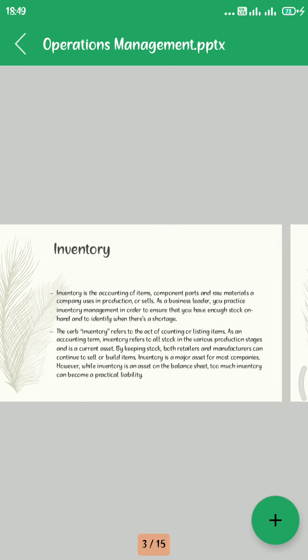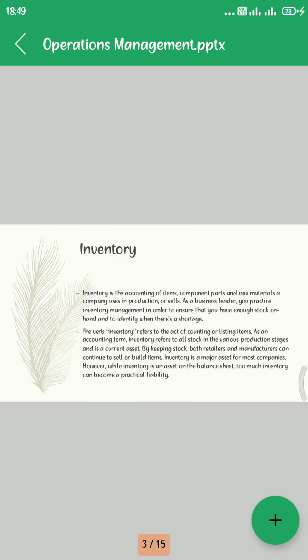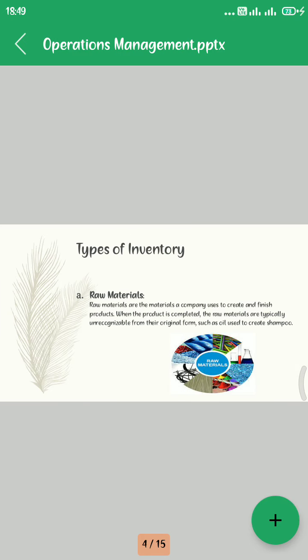First, Raw Material. Raw materials are the materials a company uses to create and finish goods. When the product is completed, the raw materials are typically unrecognizable from their original form, such as oil used to create shampoo.